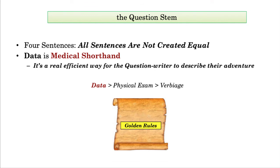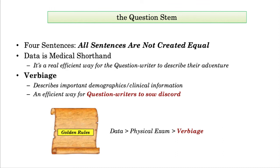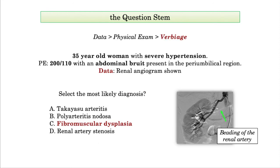So returning to our summary of the question stem, data is a form of medical shorthand. It is very efficient for the question writer to paint their picture or describe their adventure. Whereas the verbiage of the stem may provide important demographic and clinical information, it is also the easiest way for a question writer to sow discord. So let's toss in one more example before our next break. Here we have a 35-year-old woman with severe hypertension and an abdominal bruit. An angiogram is shown, which, by the way, is the classic beaded appearance of fibromuscular dysplasia. Most students recognize a young woman with a bruit and severe hypertension as having fibromuscular dysplasia regardless of the angiogram.